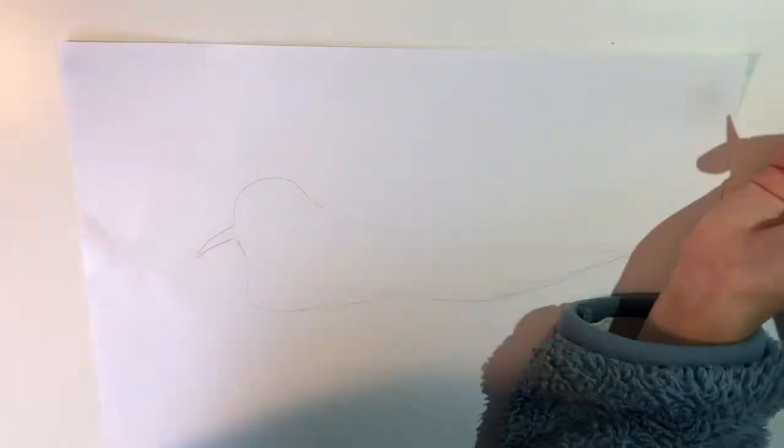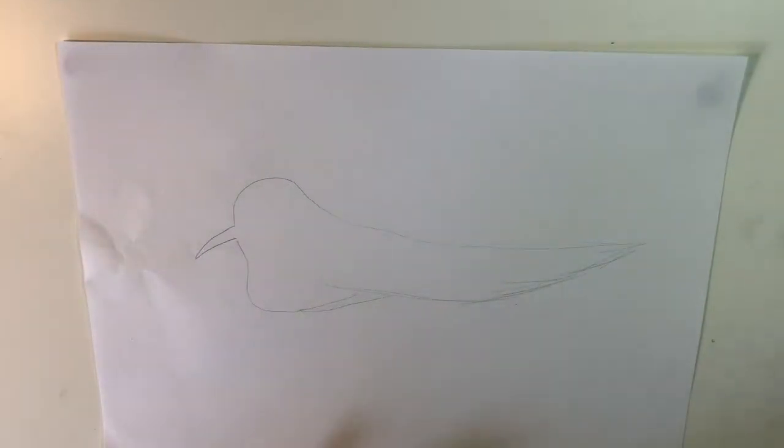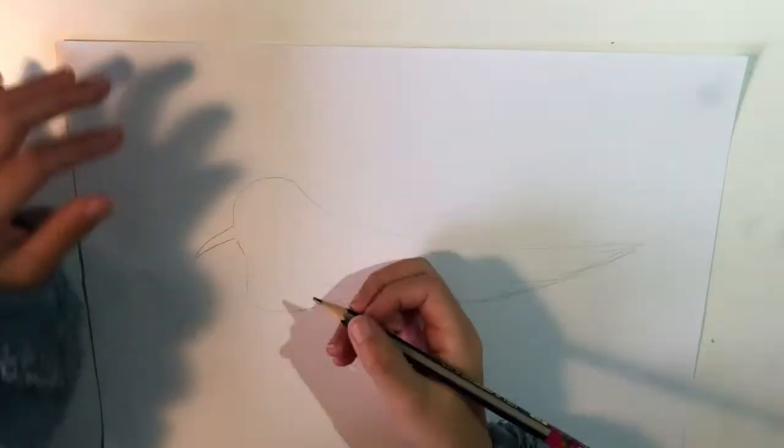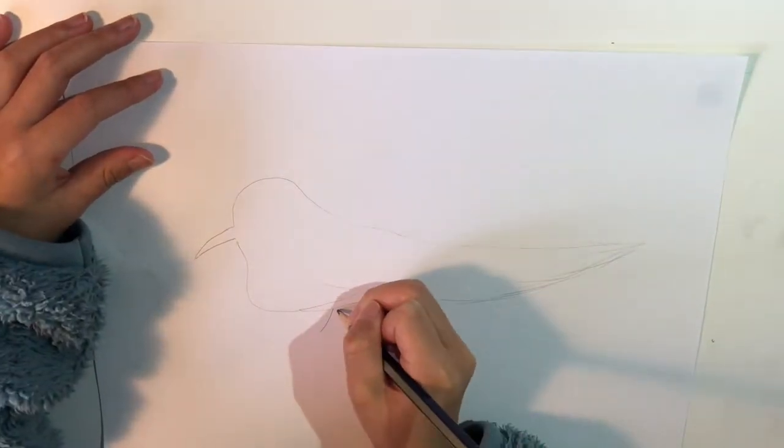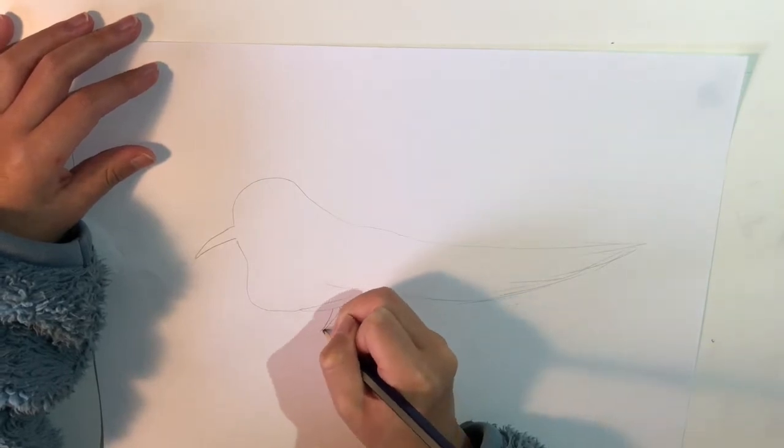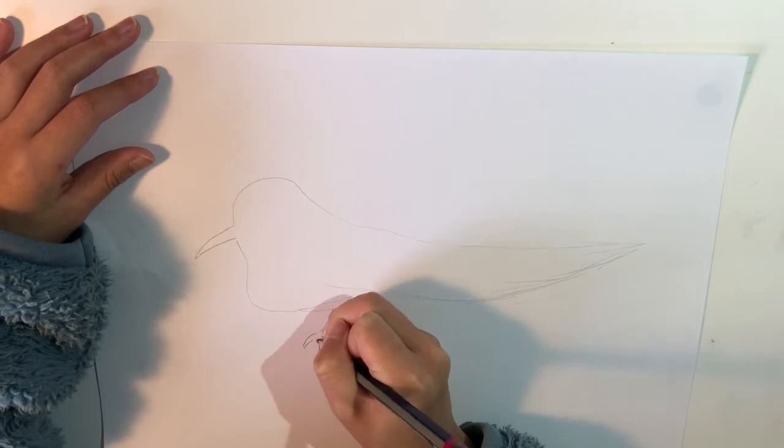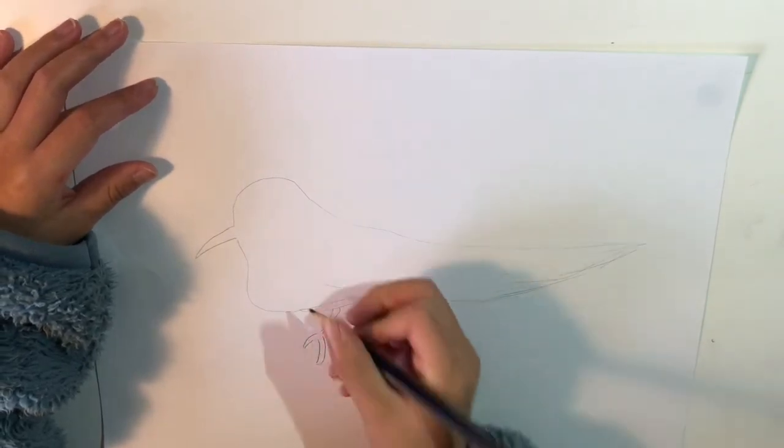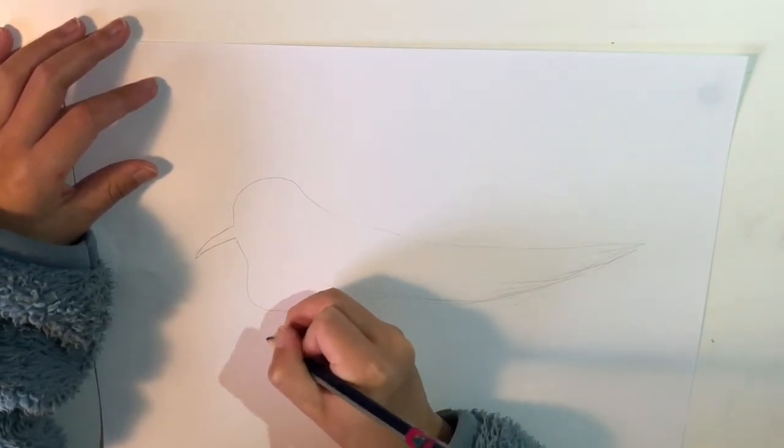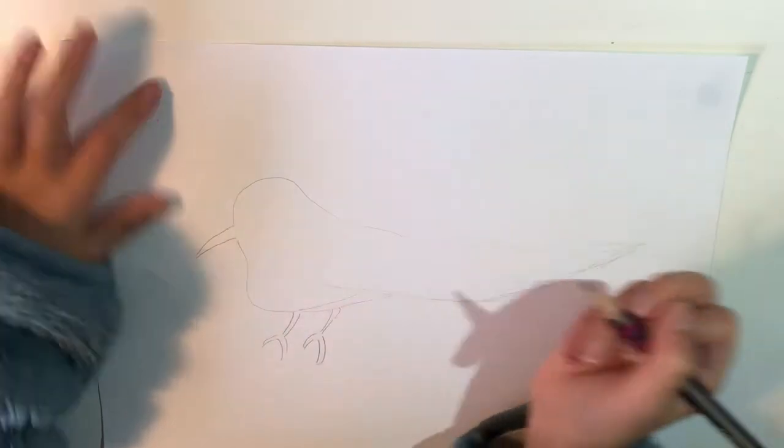Now we have drawn the body. We can draw the legs. You can draw one of them or two. This one is going to connect it to the branch. Like that.